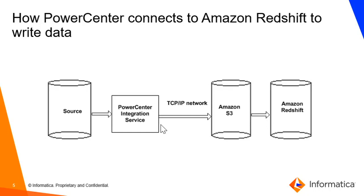The PowerCenter integration service then writes the data to Amazon S3 — Simple Storage Service — through a TCP/IP network. Amazon S3 is a storage service in which you can copy the data from source and simultaneously move data to the Amazon target. The PowerCenter integration service issues a copy command that copies data from Amazon S3 to the Amazon Redshift target table.